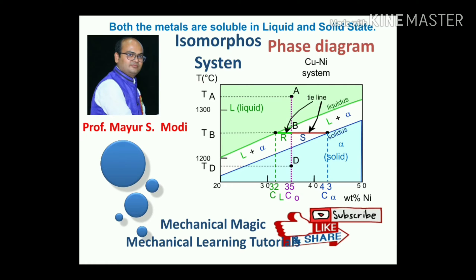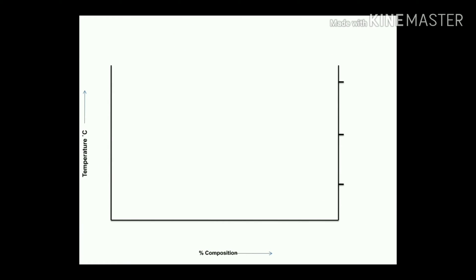So how do we construct the phase diagram for the isomorphous system — the phase diagram for the copper-nickel system? The x-axis represents weight percentage of compositions, and the y-axis from both ends represents temperature in degrees centigrade.